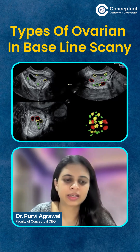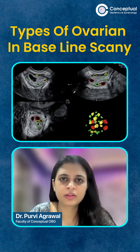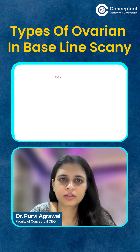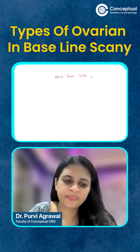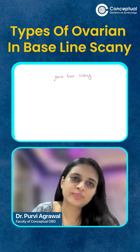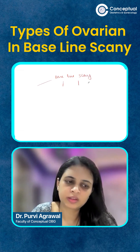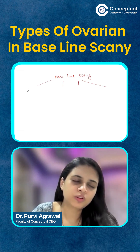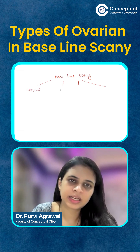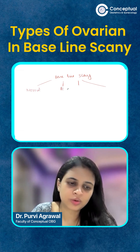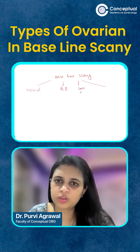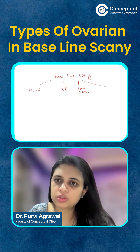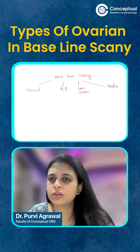At baseline scanning, you can get four types of ovaries: first is normal, second is polycystic ovary, third is low reserve ovary, and fourth is poorly responding ovary.